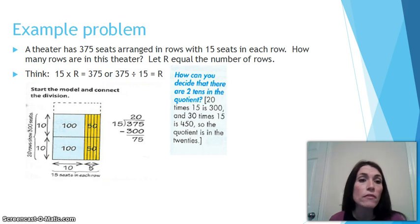In our example problem, we have a theater that has 375 seats arranged in rows with 15 seats in each row. How many rows are in this theater? Let r equal the number of rows. So r is our variable, and remember that is just a letter that's standing in the place of a number that we don't know yet. So there are a couple different ways that we could write this equation. We could write 15 times r equals 375, or 375 divided by 15 will equal r.